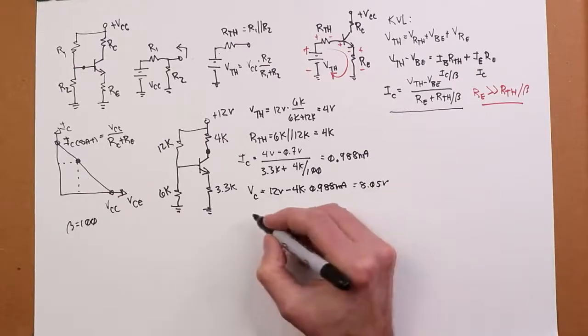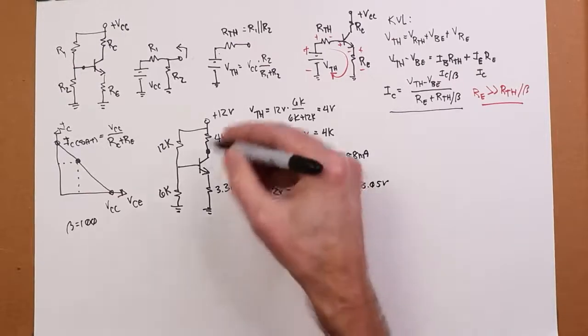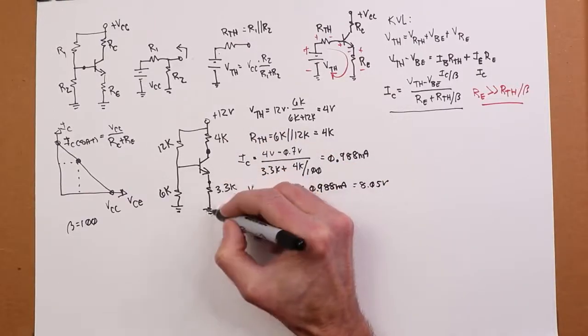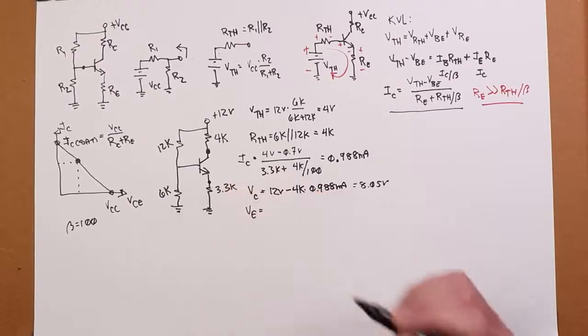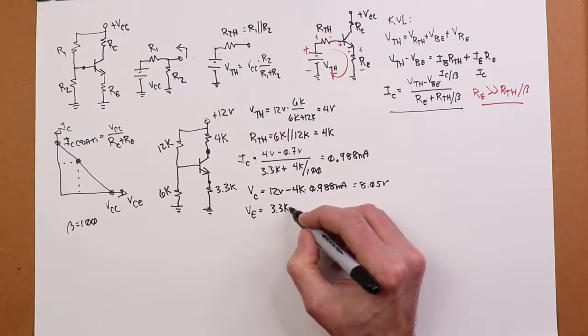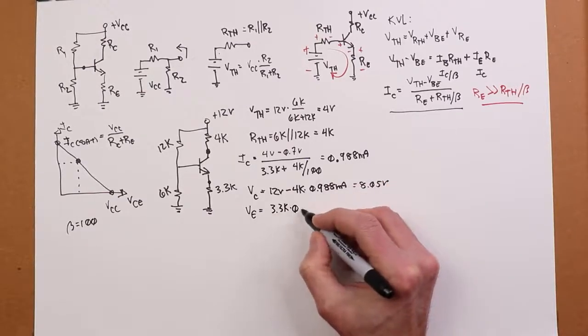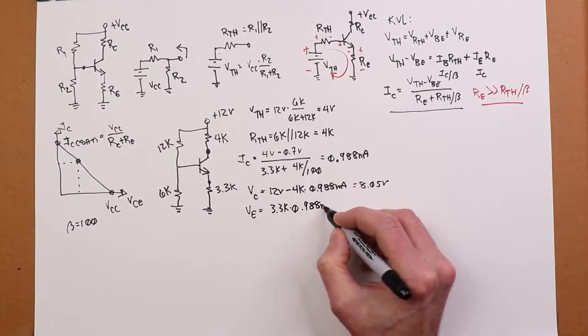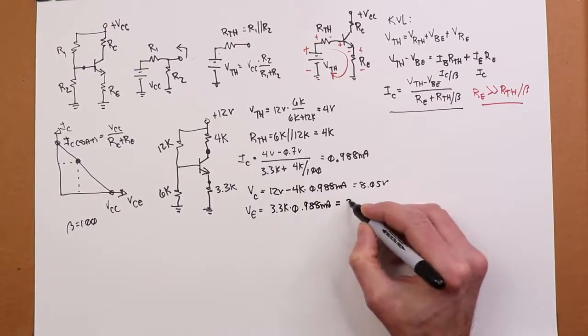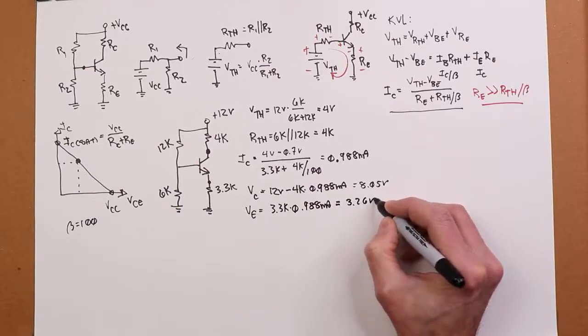We can do the same thing for the emitter. Again, assuming collector and emitter currents are the same. Just Ohm's Law. Here's the emitter, there's ground. So, there's VE right there. So, I'll just take my 3.3K times the associated current, and we get 3.26 volts.